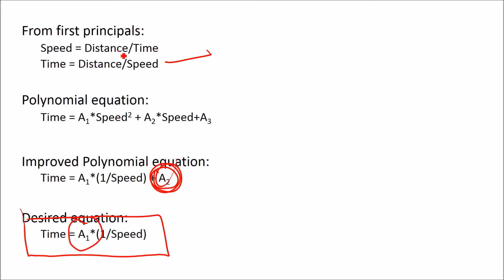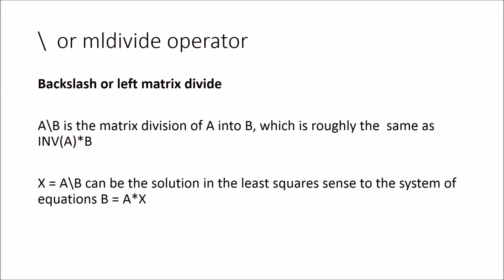The backslash is the matrix left divide operator. A backslash B is the matrix division of A into B, which is essentially the same as the inverse of A times B if you're doing matrix operations.